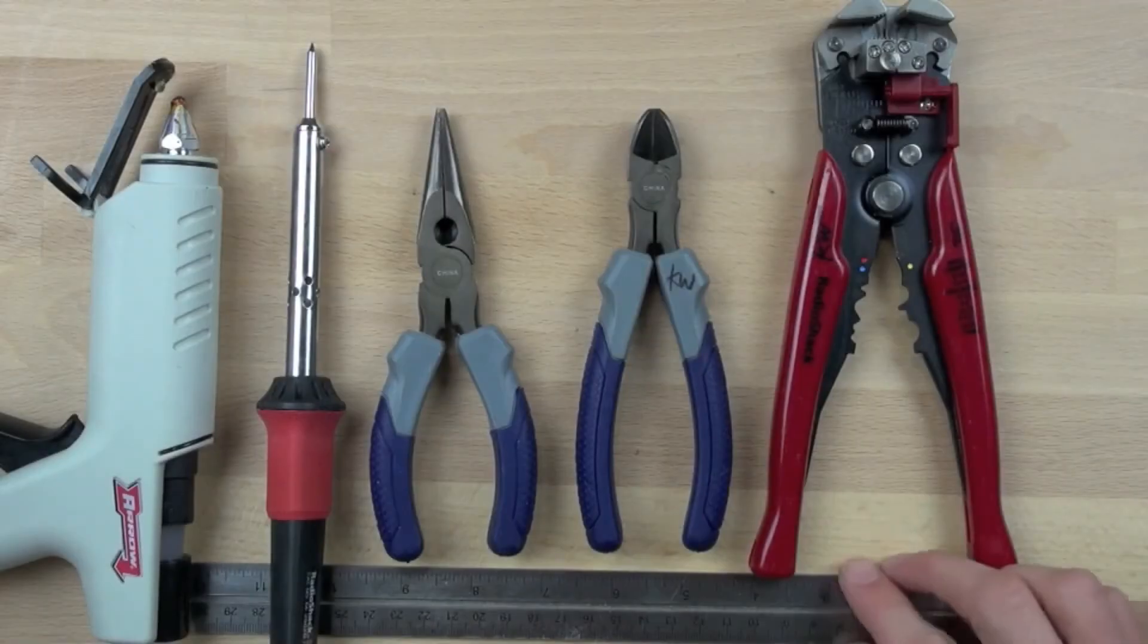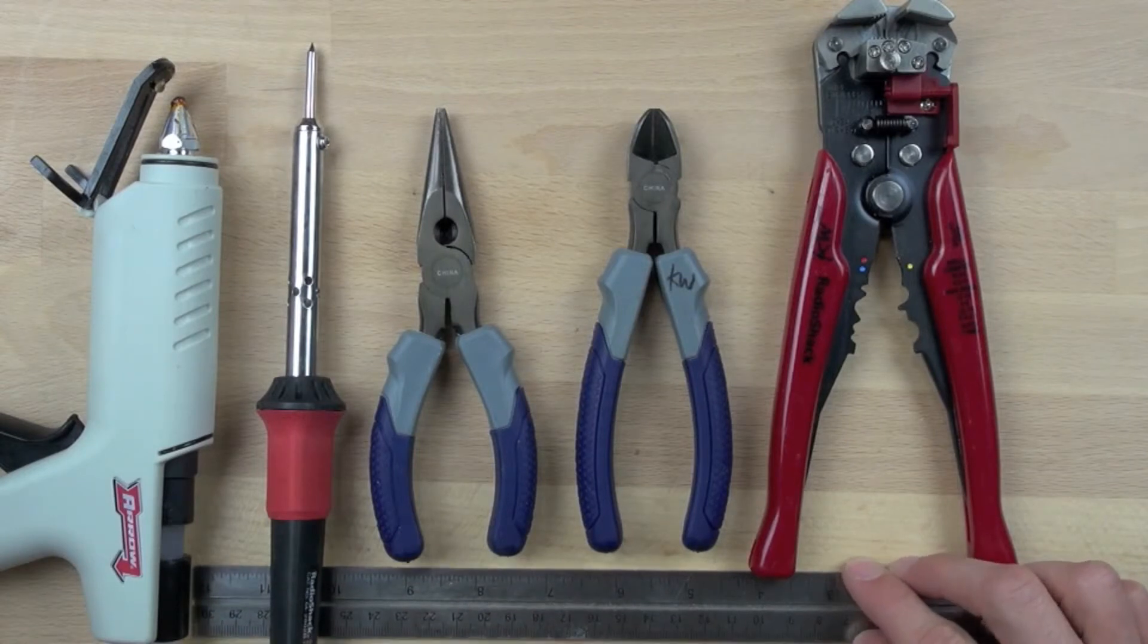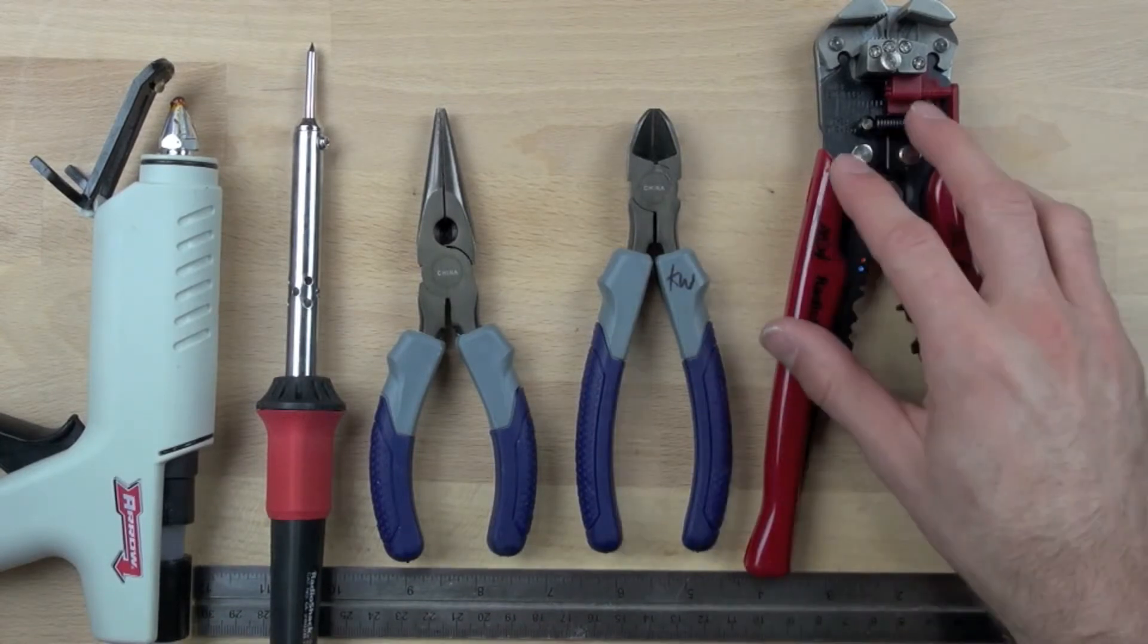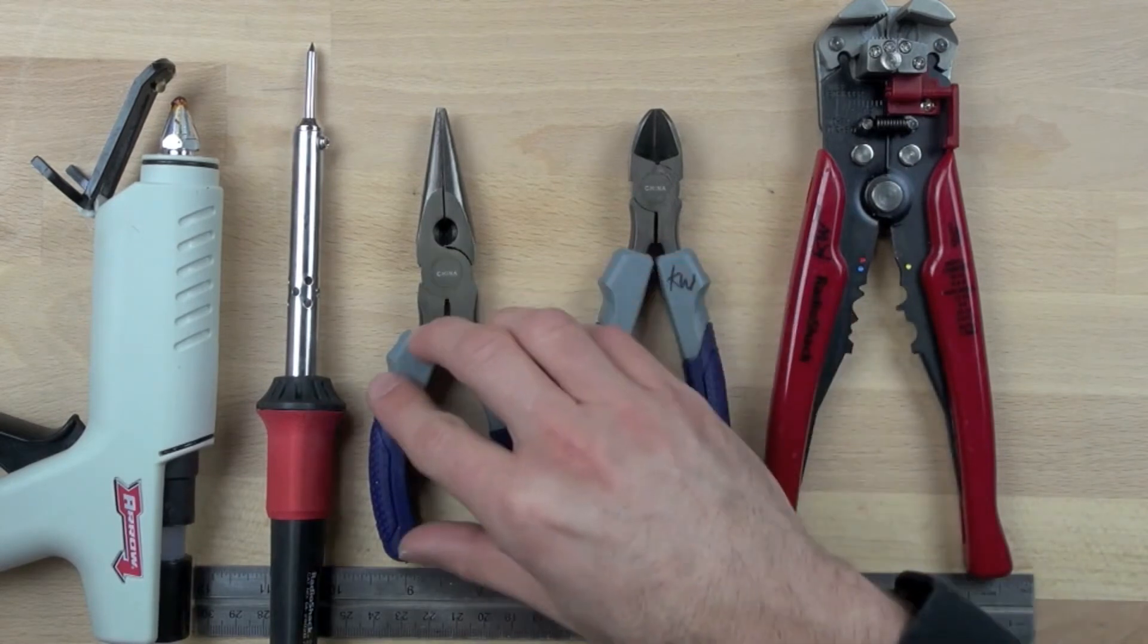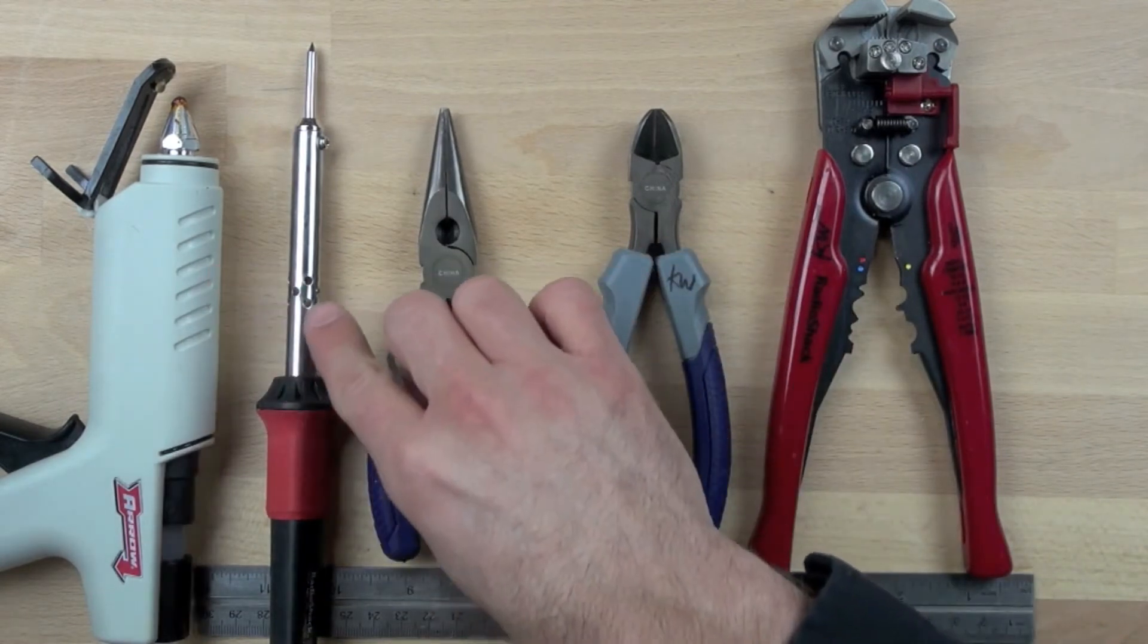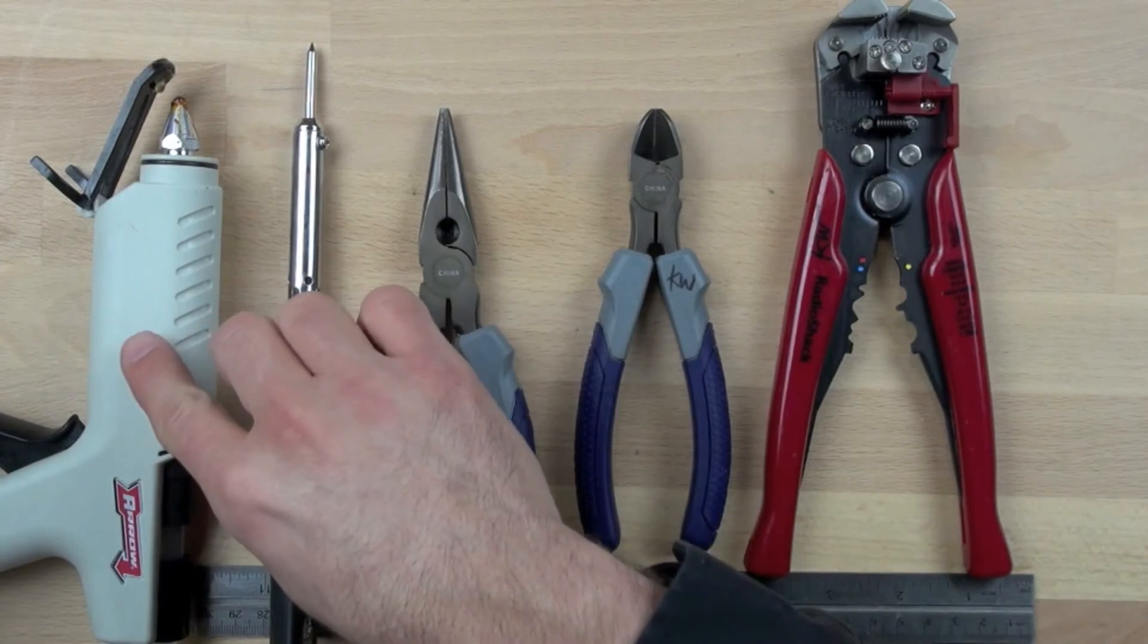The tools that we're going to need are a wire stripper, a wire cutter which is sort of a nipper pliers, a needle nose pliers, a soldering iron, and a hot glue gun.